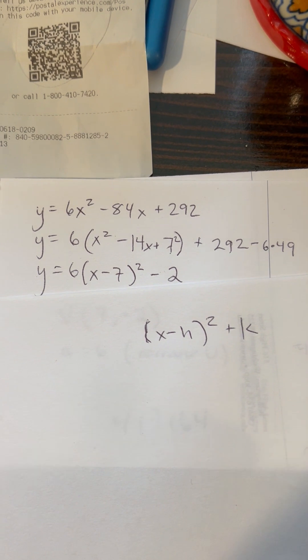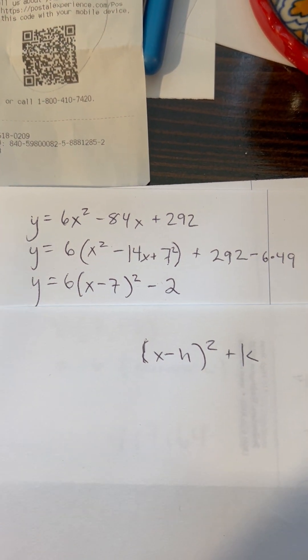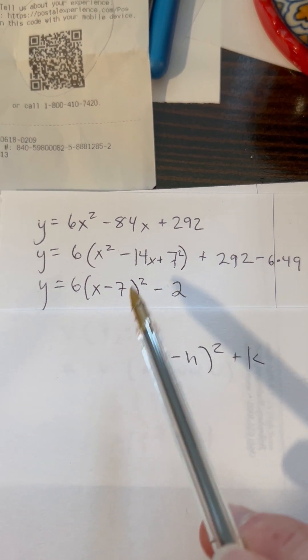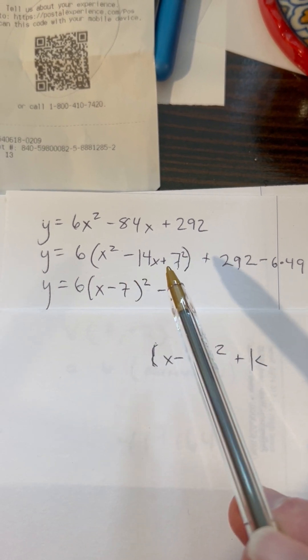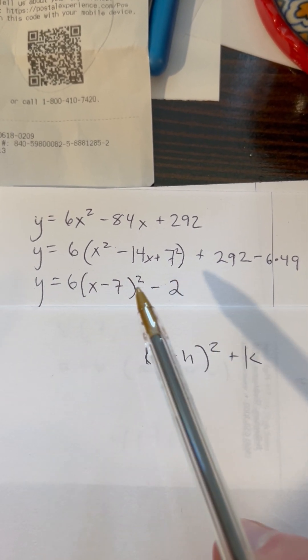By design, that binomial is (x - 7) quantity squared. By design, x² - 14x + 49 is the same as (x - 7) quantity squared.